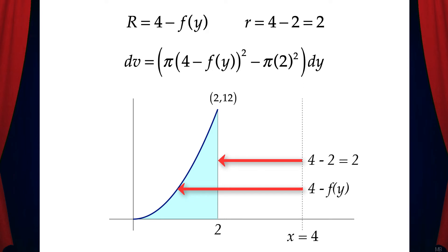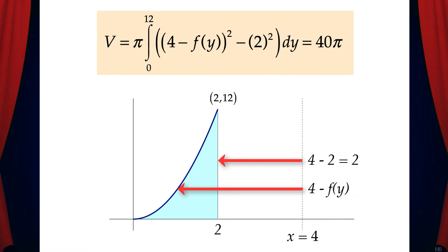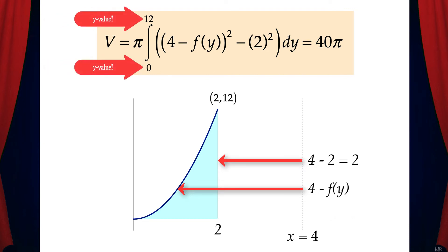Now we need to take the function y equals 3x squared and solve it for x, which gives us x equals the square root of y over 3. This is f of y. Now we can write dv, the volume of one washer, which is pi times the quantity of 4 minus f of y squared minus pi times 2 squared dy. The volume of the solid is the integral from 0 to 12 of the quantity of 4 minus f of y squared minus 2 squared dy, which equals 40 pi. The limits of integration are y values since we're adding up the volumes of washers from 0 to 12.